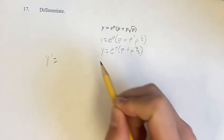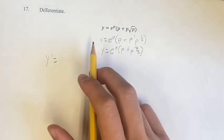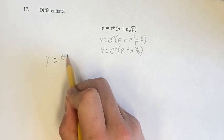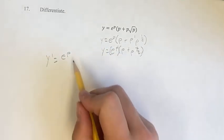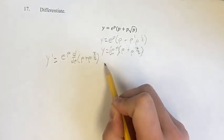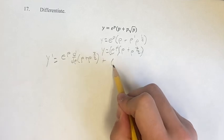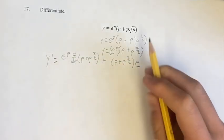So what is the derivative? Well, we have this term times this term, so we can use the product rule. We want to do the first term, I'll put it in parentheses if it makes it more clear, times the derivative of the second term plus the second term times the derivative of the first term.